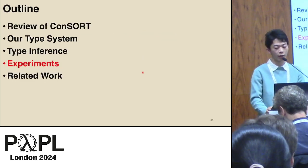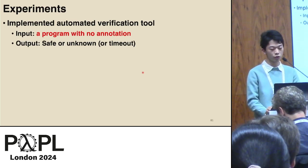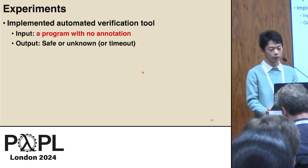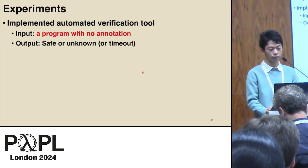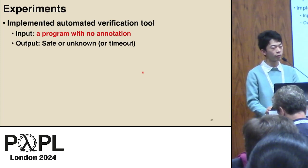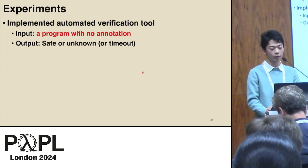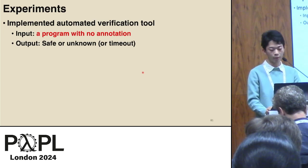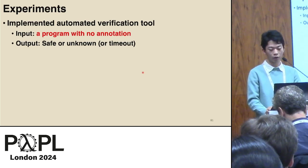Next, I'll explain our experiments. We implemented an automated verification tool. The input of our tool is a program with no annotation — meaning no type annotation, no ownership annotation, and no alias annotation. The output of the tool is either safe or unknown. If the tool successfully types a program, we can say the program is safe. Conversely, if the tool cannot type a program, we can only say the safety of the program is unknown. We conducted verification on some benchmarks prepared for our experiments.